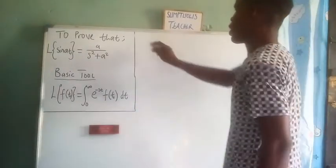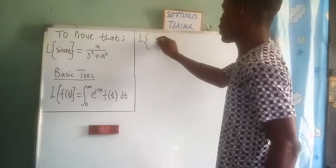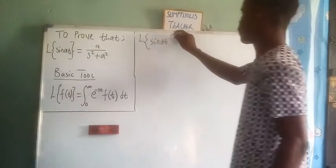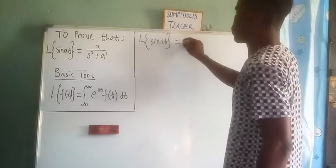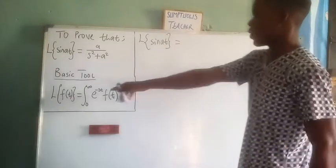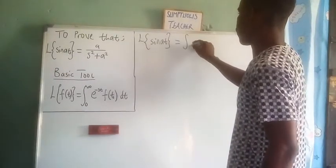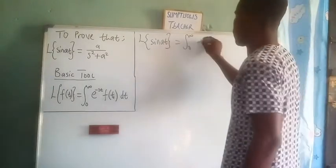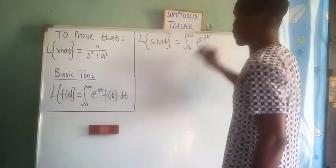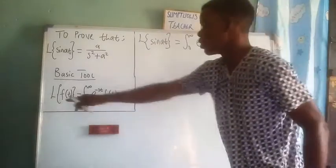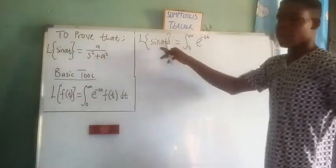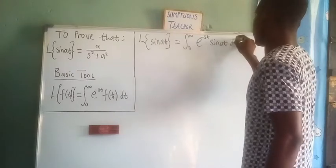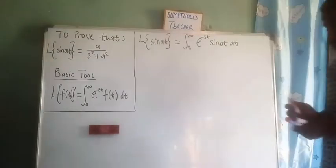So we start by saying that the Laplace transform of sine at should be equal to the integral from 0 to infinity of e to the negative st, where f of t here is sine at. So we have the integral from 0 to infinity of e to the negative st times sine at, with respect to t.